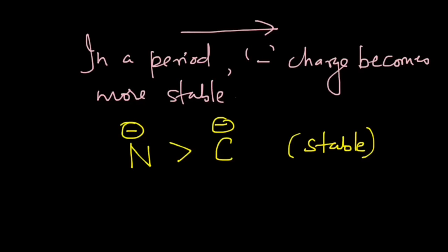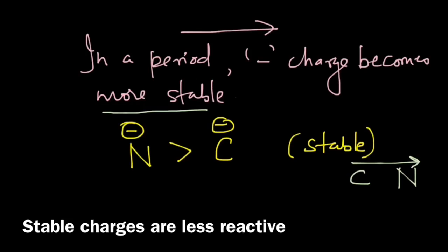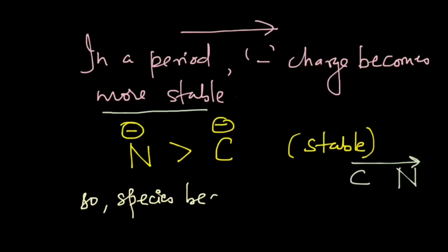A nitrogen atom with a negative charge is more stable than a carbon atom with a negative charge, because nitrogen is to the right of carbon in a period. So whenever you move from left to right in a period, negative charge becomes more stable. As the charge becomes stable, reactivity decreases, and so the species becomes less basic because it is less reactive. Let us see how we can use this factor in deciding the order of basicity.